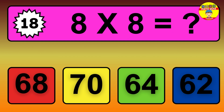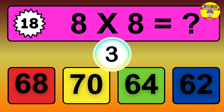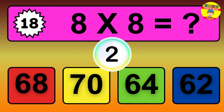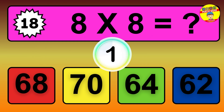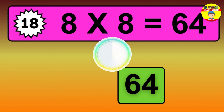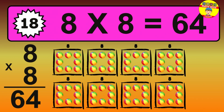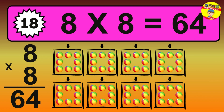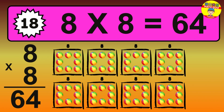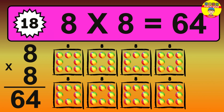Question 18. 8 times 8 equals what? The answer is 8 times 8 is 64. To calculate, we have 8 groups with 8 balls each. So how many balls do we have? 64 balls.